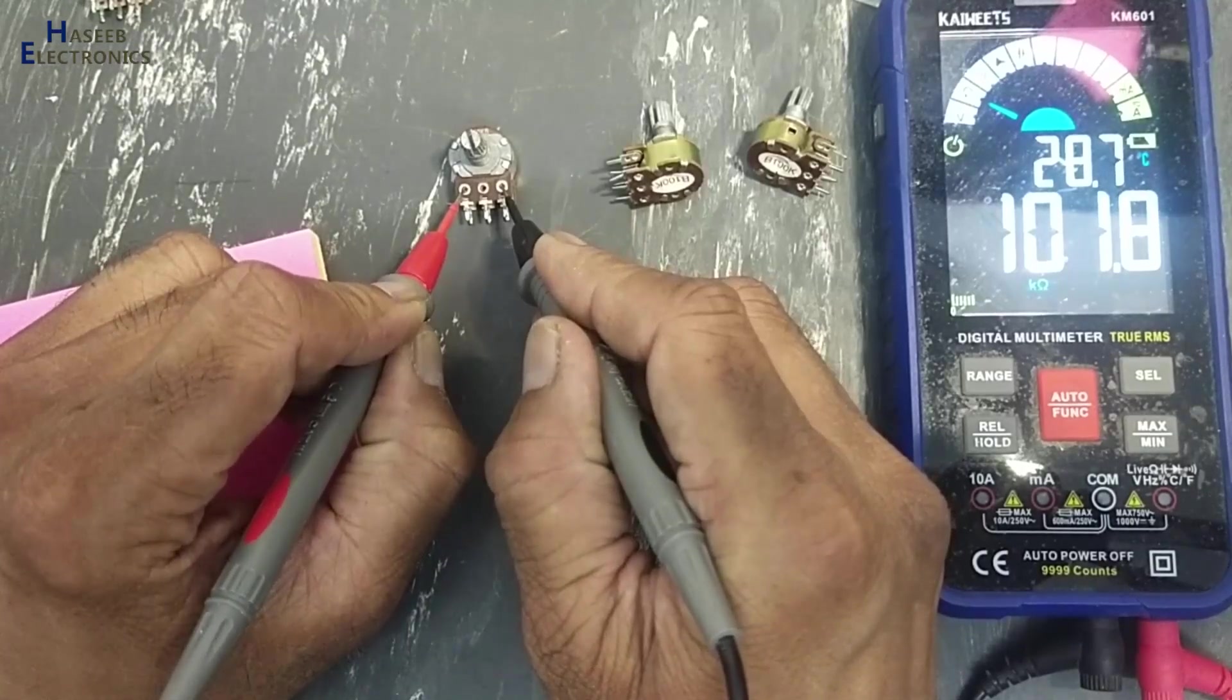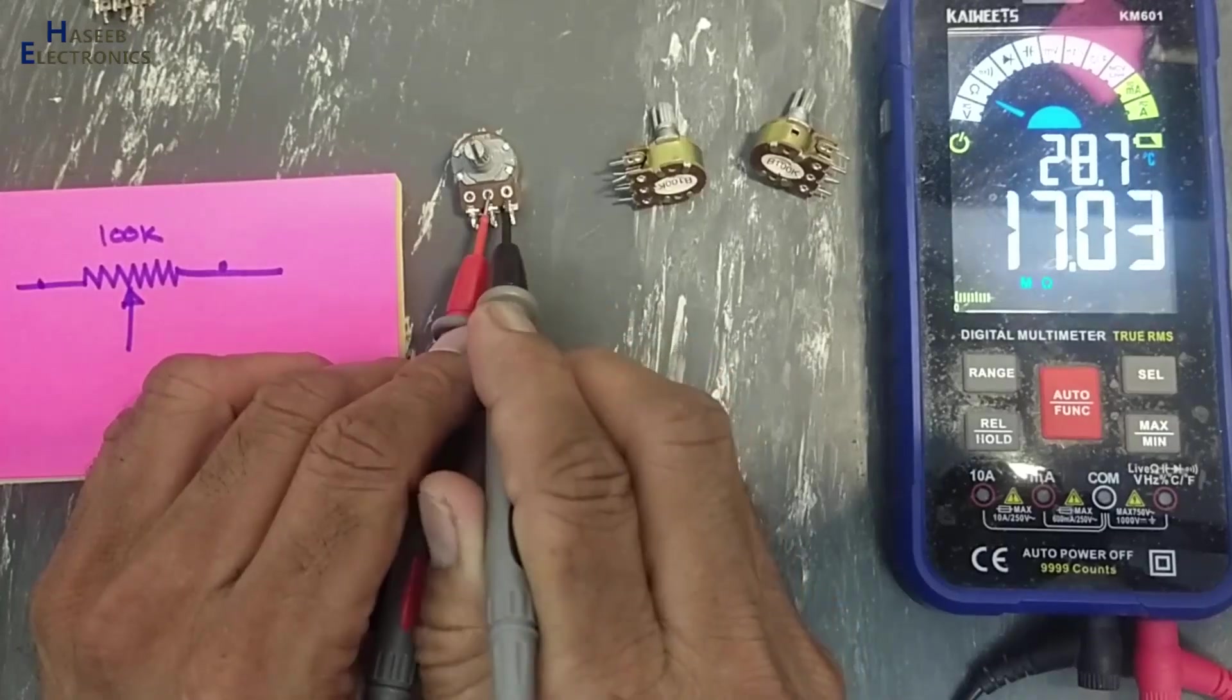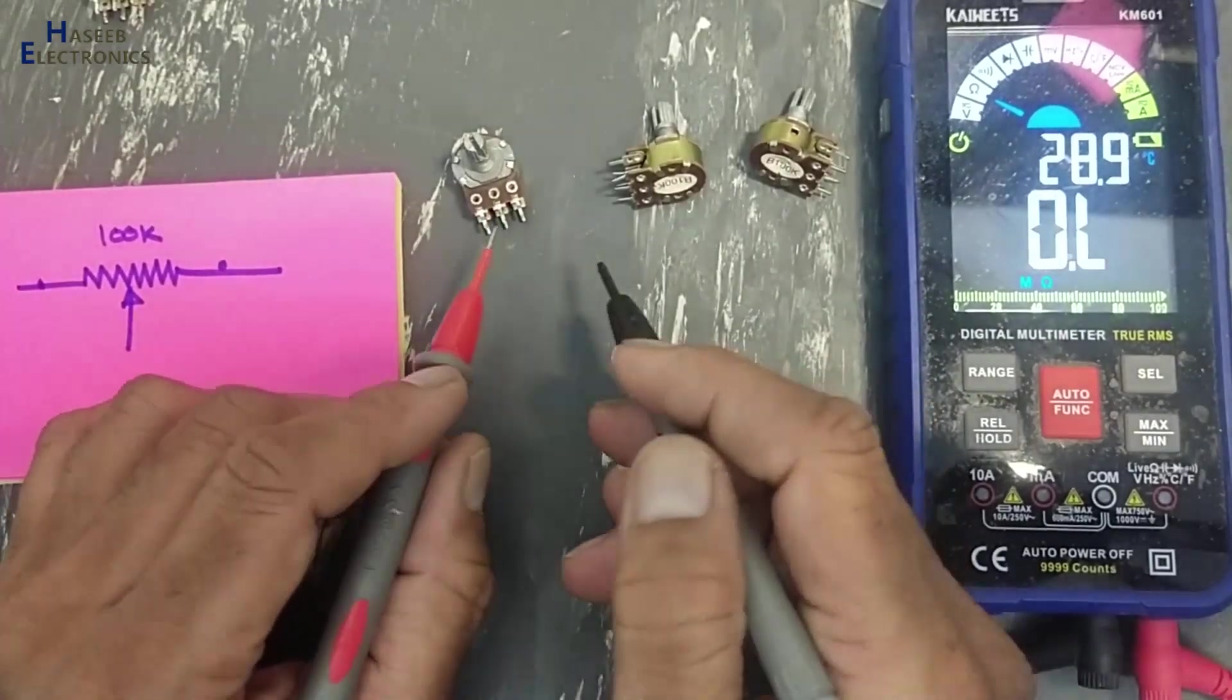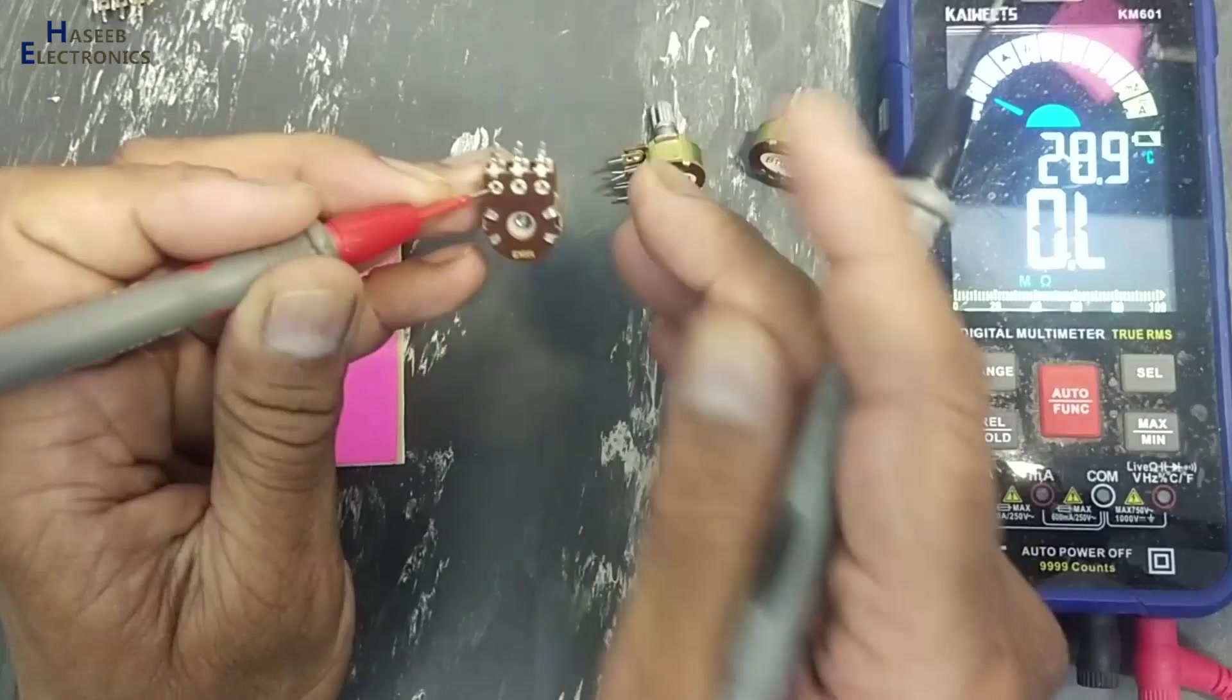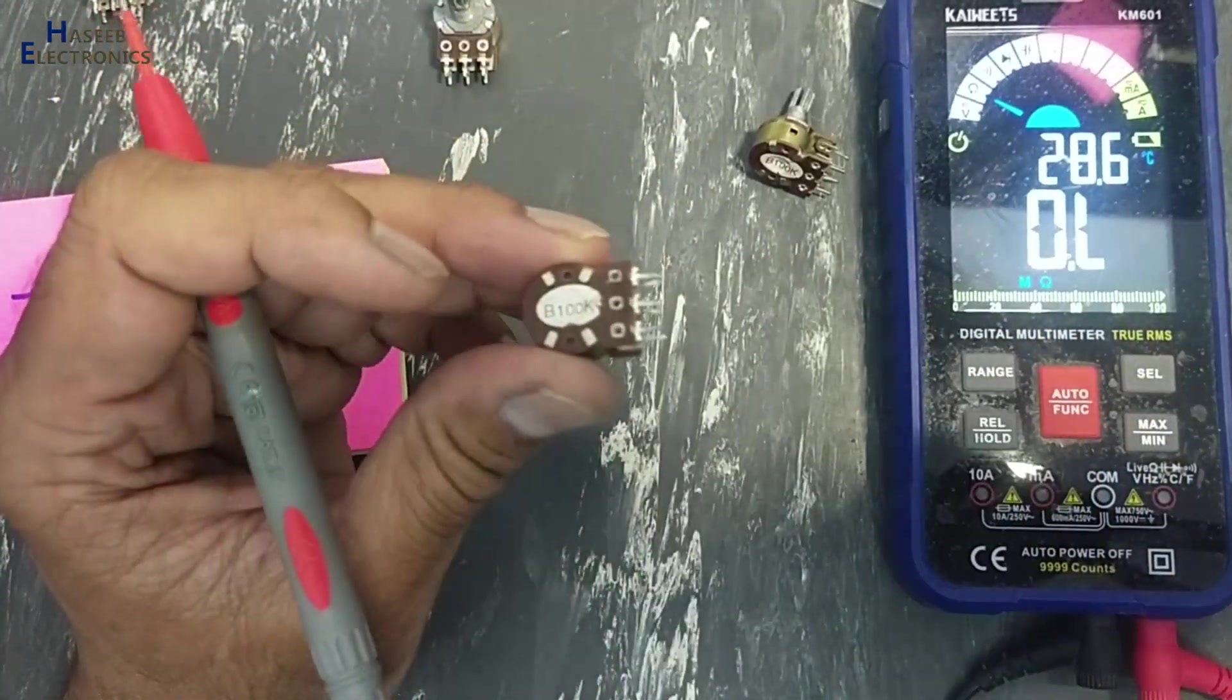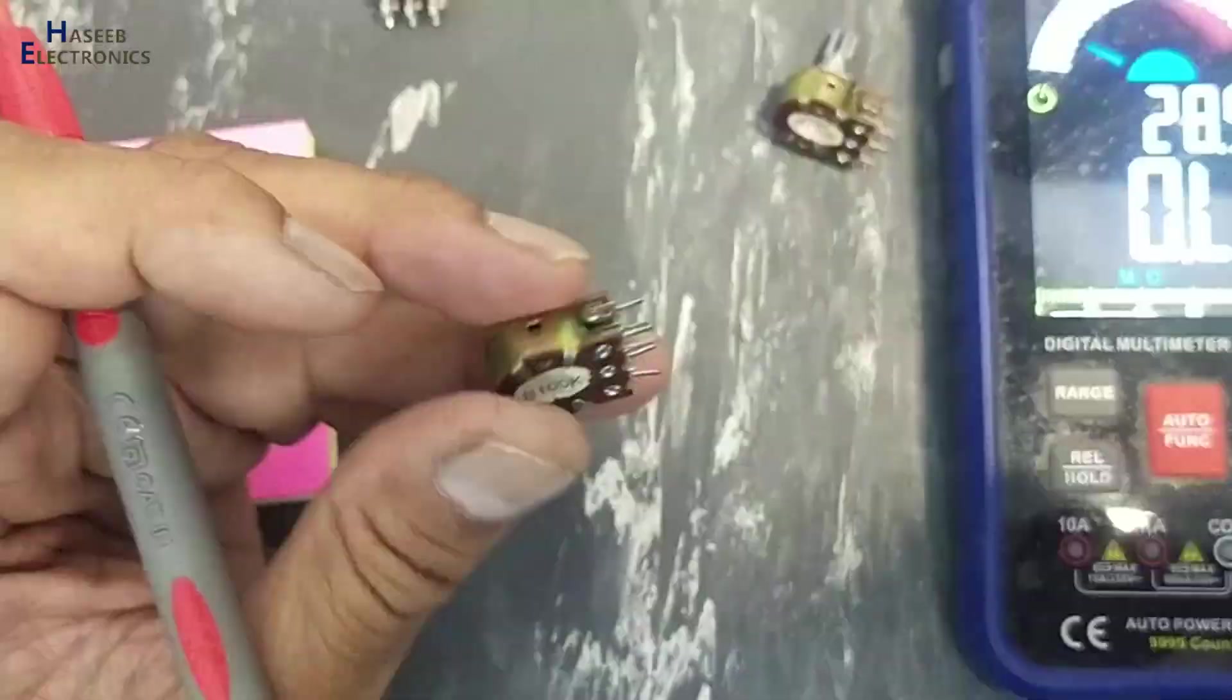100k resistor between outer terminals. From this point to this point, it will divide the resistance between this point and this slider. It is a stereo potentiometer with two stages. The second stage is also 100k. When I purchased this one, it is B 100k, that means it is linear 100 kilo ohms potentiometer.